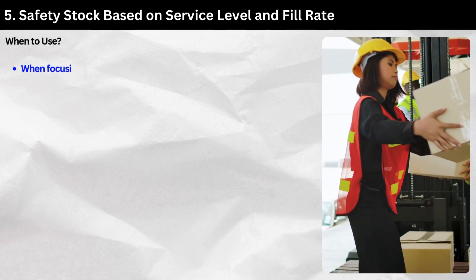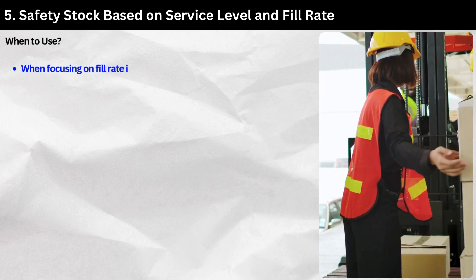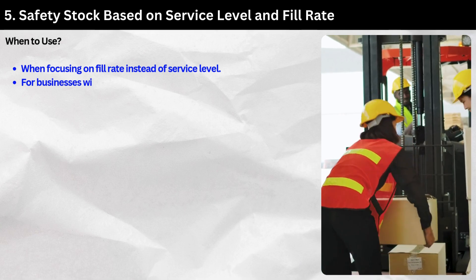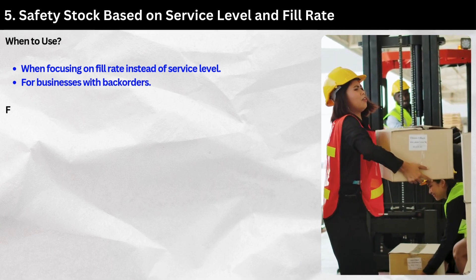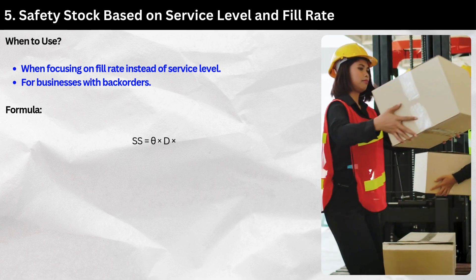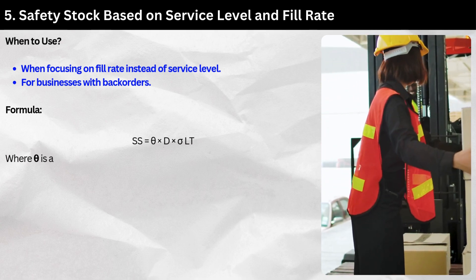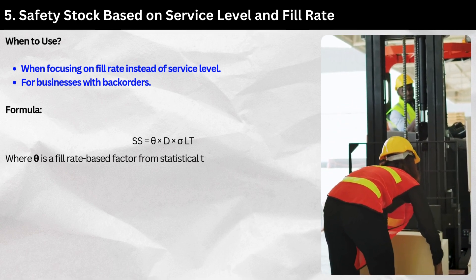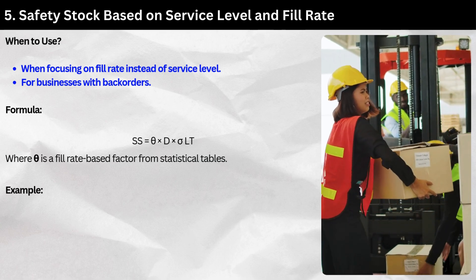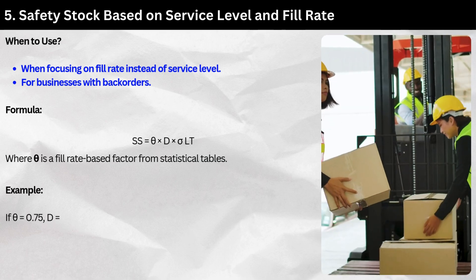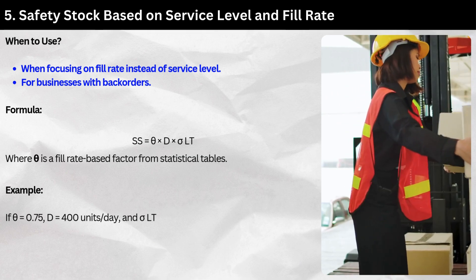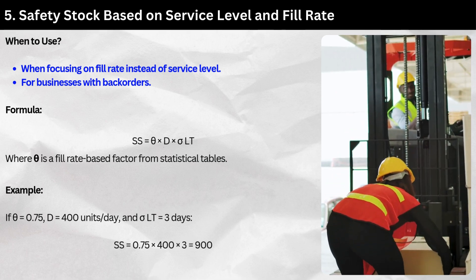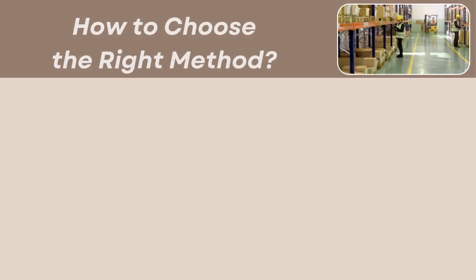Method 5: Safety stock based on service level and fill rate. When to use: when focusing on fill rate instead of service level, for businesses with backorders. Formula: SS = θ × D × σLT, where θ is a fill rate-based factor from statistical tables. Example: If θ = 0.75, D = 400 units/day, and σLT = 3 days, then SS = 0.75 × 400 × 3 = 900 units.